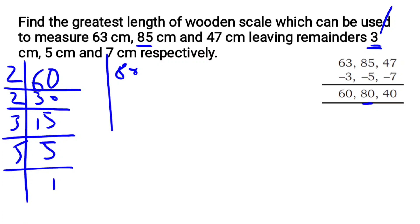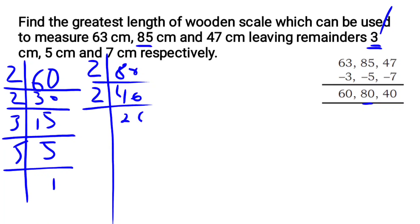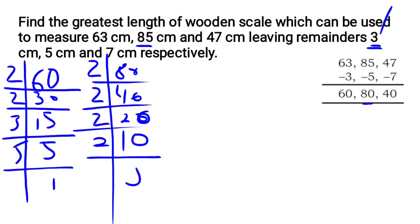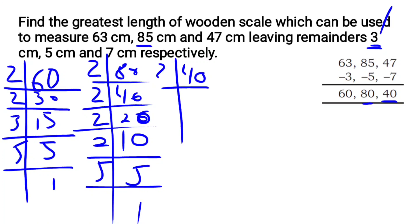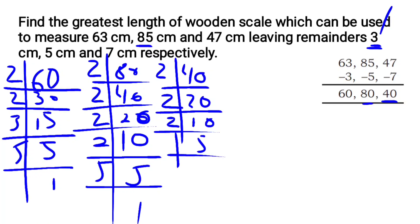Now finding prime factors of 80: 80 divided by 2 is 40. 40 divided by 2 is 20. 20 divided by 2 is 10. 10 divided by 2 is 5. Finally 5 divided by 5 is 1. So the factors of 80 are 2 × 2 × 2 × 2 × 5.